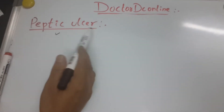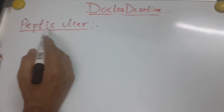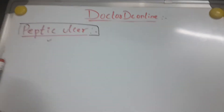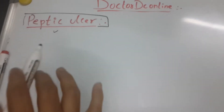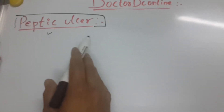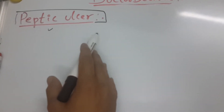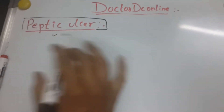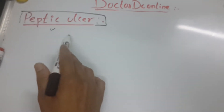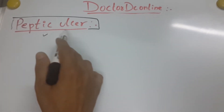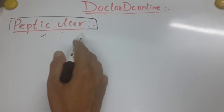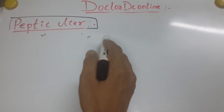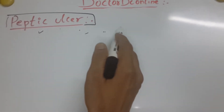Today our topic is peptic ulcer. It's a broad topic, and I want to describe all etiology, physiology, diagnosis, and even treatment. I want to start from the basic concept. The definition of peptic ulcer means damage to mucosa and deeper tissue that is exposed to acid and pepsin — that is known as a peptic ulcer.